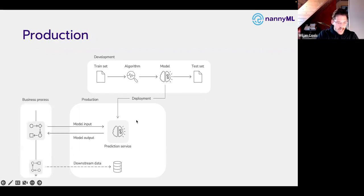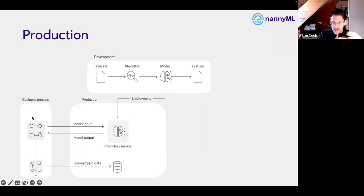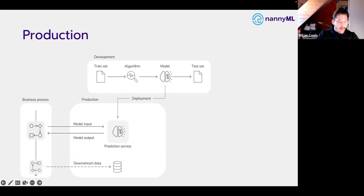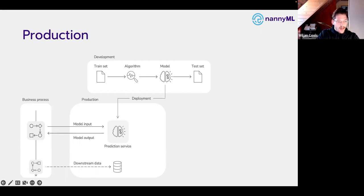When the model is really in production, we have the business process. For instance, we might be doing churn prediction — we send some data about our customers to the prediction service and get back the probability to churn. The business process would then be the retention process. We'd take retention measurements based on the model output. These are downstream processes that happen after the prediction is made. Making predictions is never the end point — a machine learning model is always embedded in a business process, so there is more data we can gather later on.